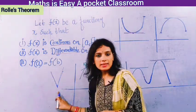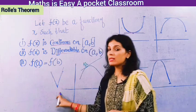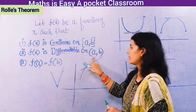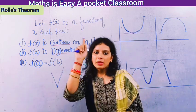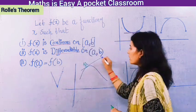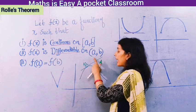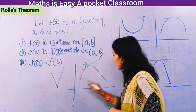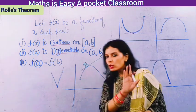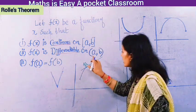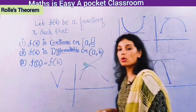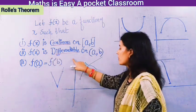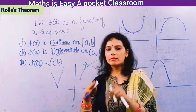If a curve has a peak point, it is not differentiable. So on the open interval, the function should be differentiable. Why open? Open means you exclude points a and b, because at a and b you cannot draw a tangent. Excluding a and b, at all other points you can draw a tangent.